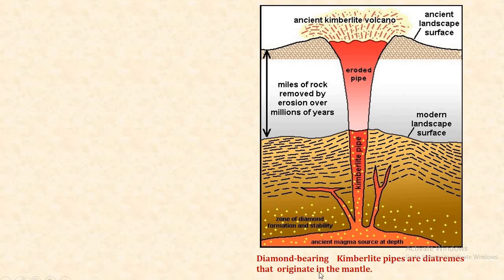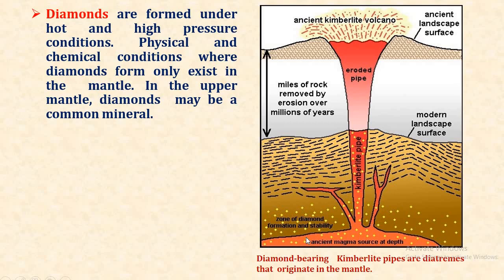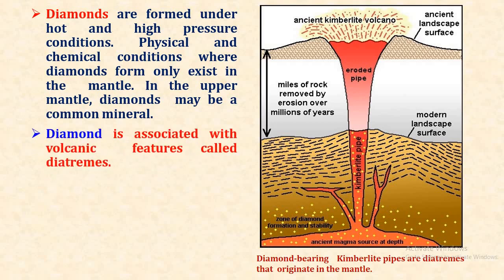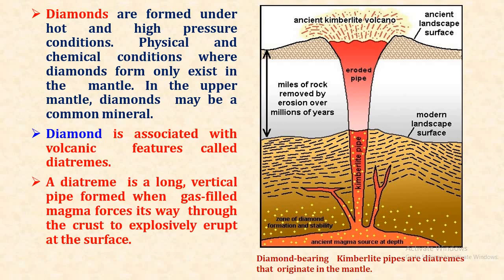Diamonds are formed under hot and high pressure conditions. The physical and chemical conditions where diamonds form only exist in the mantle. In the upper mantle, diamonds may be common minerals. Diamond is associated with volcanic features called diatremes. A diatreme is a long vertical pipe formed when gas-filled magma forces its way through the crust to explosively erupt at the surface.